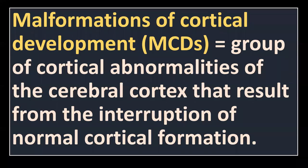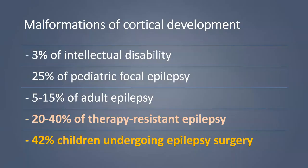Malformations of cortical development are a very broad group of disorders of the cerebral cortex resulting from any kind of interruption of the process of cortical formation. It's an important group, especially in the pediatric population. They can be found in about 3% of patients with intellectual disability and, more importantly, they are a frequent finding in patients with pediatric epilepsy, present in about 25% of pediatric focal epilepsy cases.